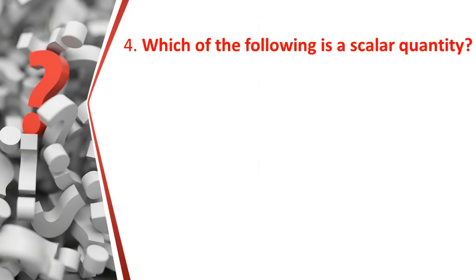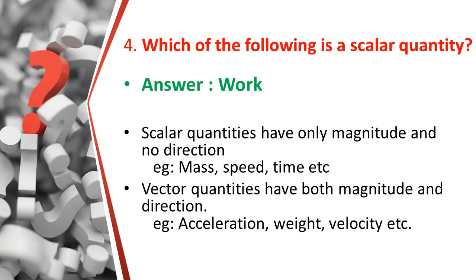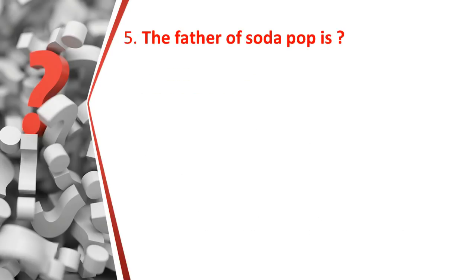The third question was the unit of magnetic flux and the answer is Weber. The fourth question is: which of the following is a scalar quantity? The answer is work. Scalar quantities have only magnitude and no direction. Examples of scalar quantities: mass, speed, and time. Vector quantities have both magnitude and direction. Examples: acceleration, weight, and velocity.